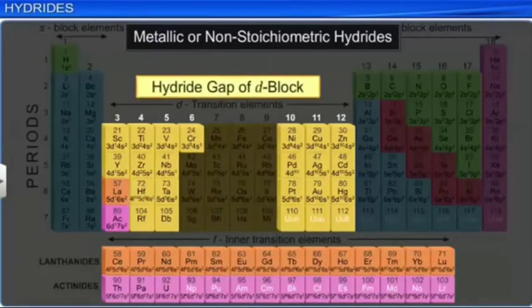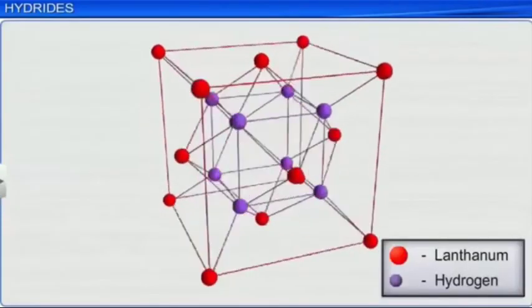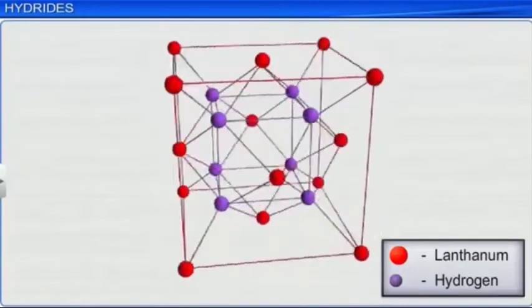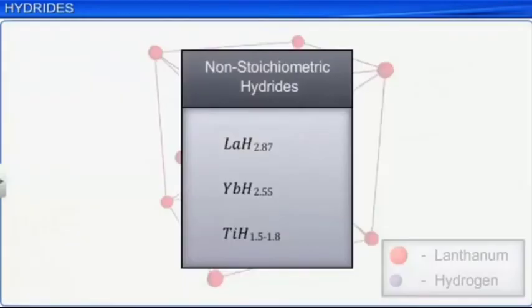Metallic hydrides are deficient in hydrogen and are almost always non-stoichiometric. For example, LaH2.87, YbH2.55, and TiH1.5 to 1.8. The composition of these hydrides does not correspond to simple whole number ratio and also varies with change in temperature and pressure. And hence, these hydrides are also called non-stoichiometric hydrides.